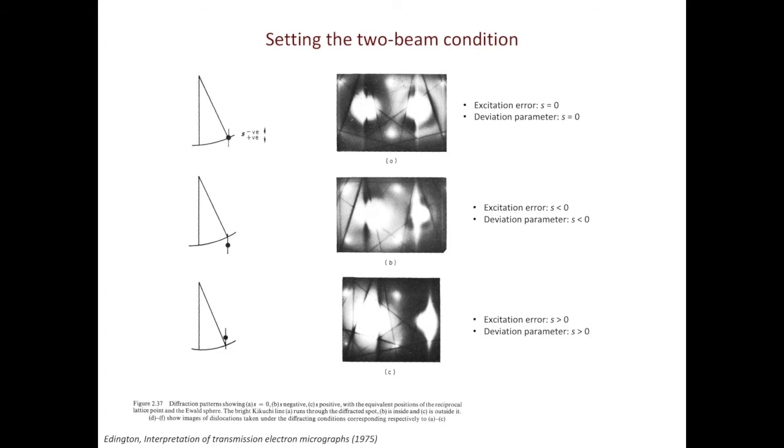In the second case, we have the bright Kikuchi line going through the inner part of the diffracted beam. In diffraction pattern, it cuts through the top part of the reciprocal lattice rod, also the negative part of the reciprocal lattice rod. We can also have the bright Kikuchi band going through the outer side of the diffracted beam. In this case, the Ewald sphere will cut through the lower part of the reciprocal lattice rod, also the positive part. The excitation error and deviation parameter are greater than zero.